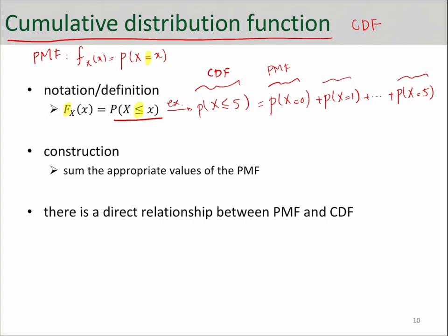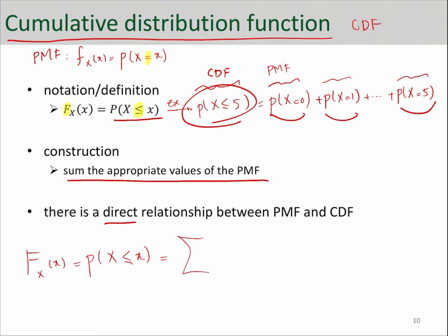So the summation of appropriate values of PMF will give you the CDF, and that's what it says here: summation of appropriate values of PMF. So here you can see the direct relationship that exists between PMF and CDF. We can say CDF, or capital F_X at point x, is probability that X is less than or equal to x, which is summation over the PMF function for those values that are less than or equal to this x.